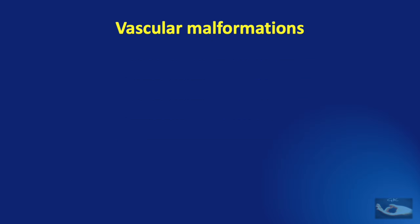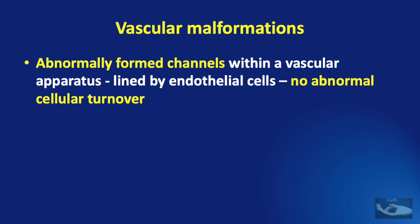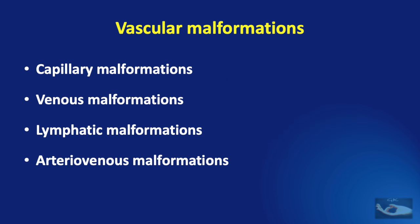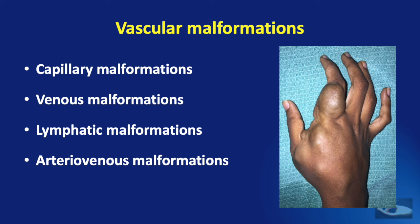On the other hand, vascular malformations are abnormally formed channels within a vascular apparatus, lined by endothelial cells, and there is no abnormal cellular turnover. They are congenital in nature but usually not noticed at birth. They never regress and grow proportionately with the individual. Vascular malformations are classified according to the type of vessel involved: capillary, venous, lymphatic, or arteriovenous malformation. This shows an example of a vascular malformation.